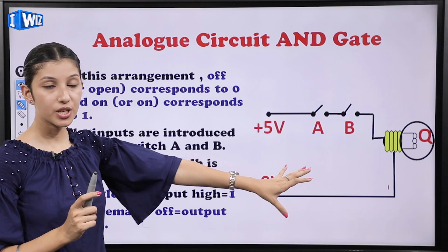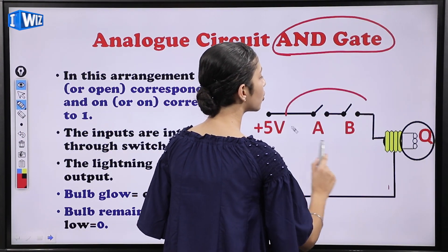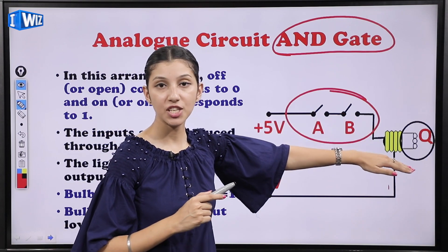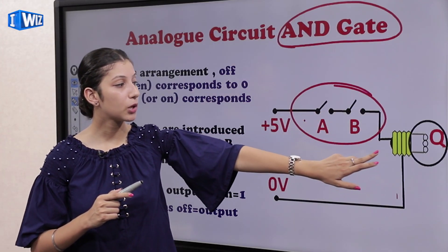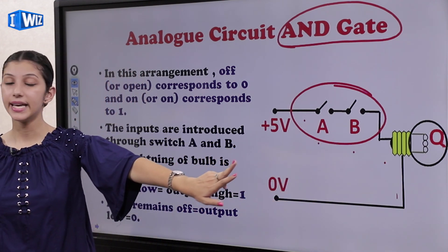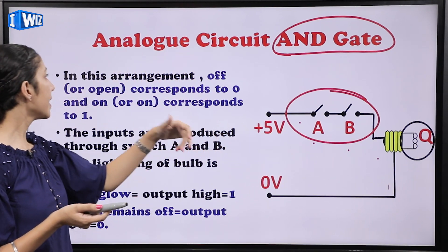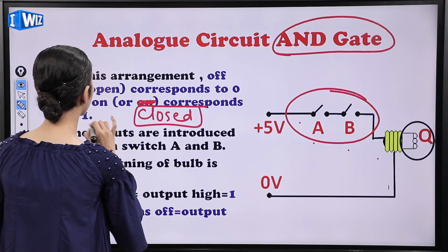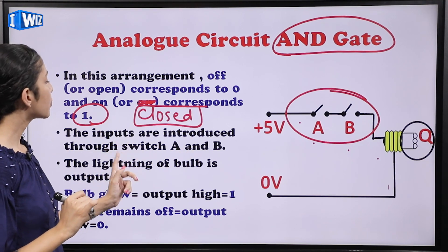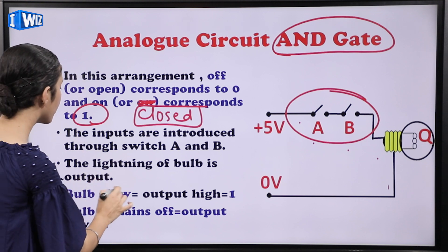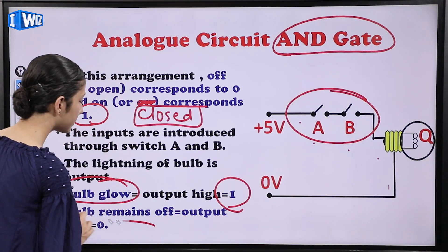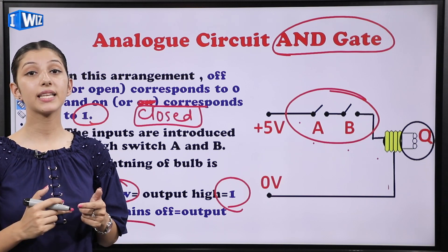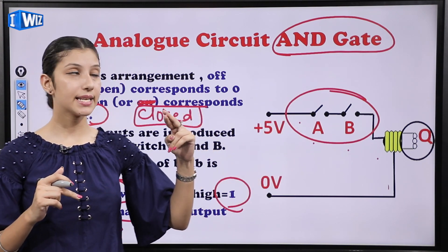Analog circuit for AND gate: two switches are connected in series with a bulb. If even one switch is open (0), current won't flow and the bulb won't glow. Only when both switches are closed (1) will the bulb glow. Off or open corresponds to 0, and closed corresponds to 1. This is similar to OR gate but the switches here are in series — not parallel.